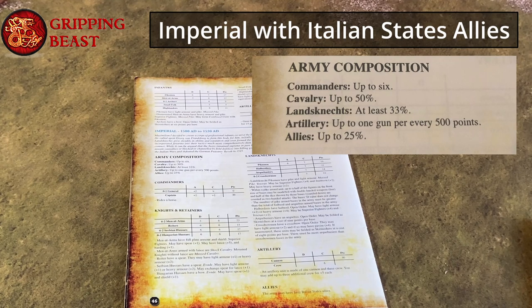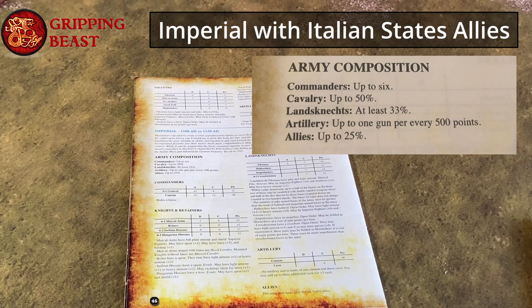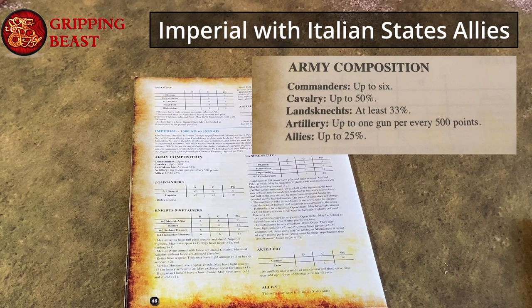In this example the imperial army list allows you to have up to six commanders, up to 50% cavalry, and at least 33% of the army must be made up of Landsknechts. You may have one artillery piece for every 500 points in your list and the list may have up to 25% allies. In this case we may choose allies from the later Italian states list.